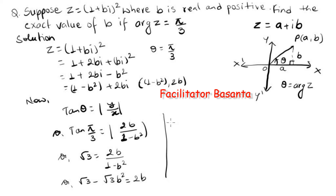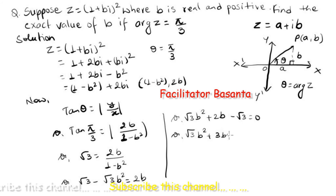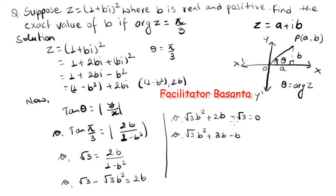This can be rearranged as √3·b² plus 2b minus √3 equals 0. Now we will factor this quadratic expression.